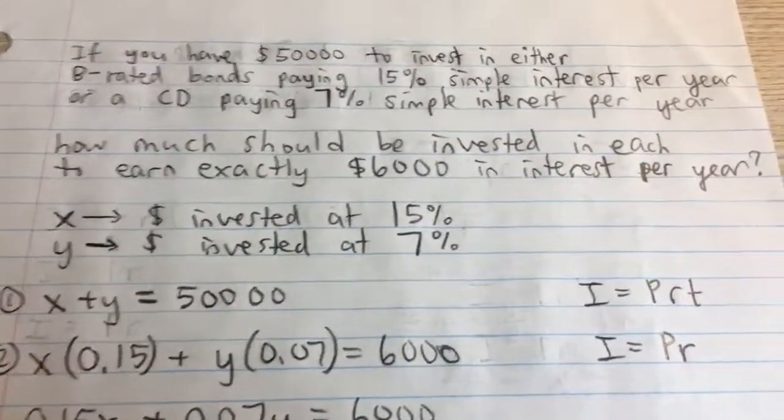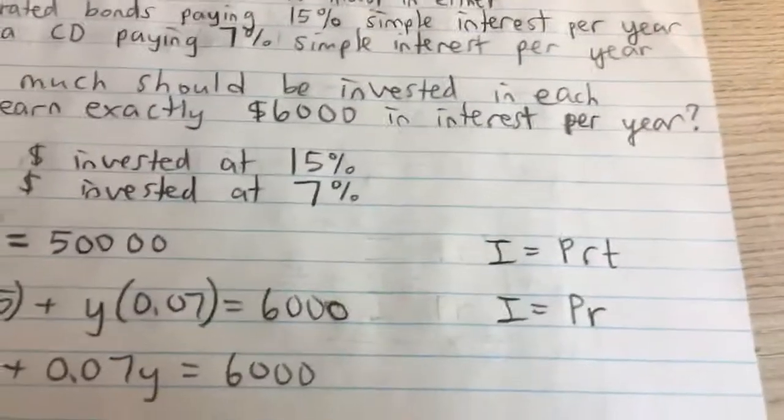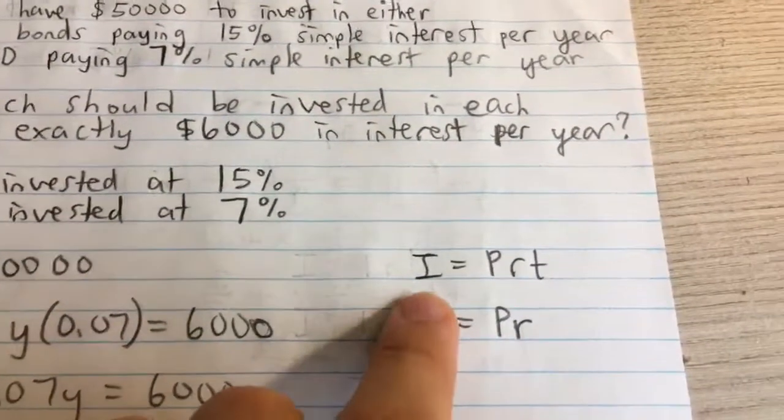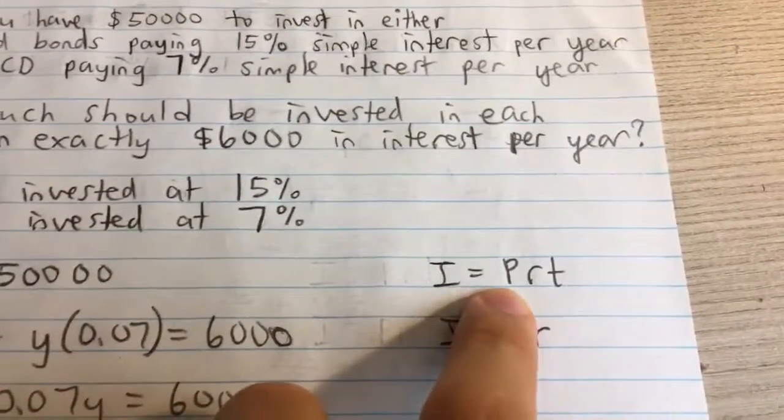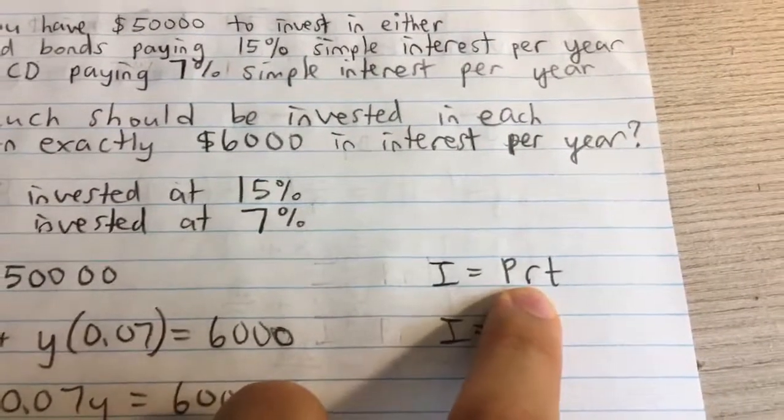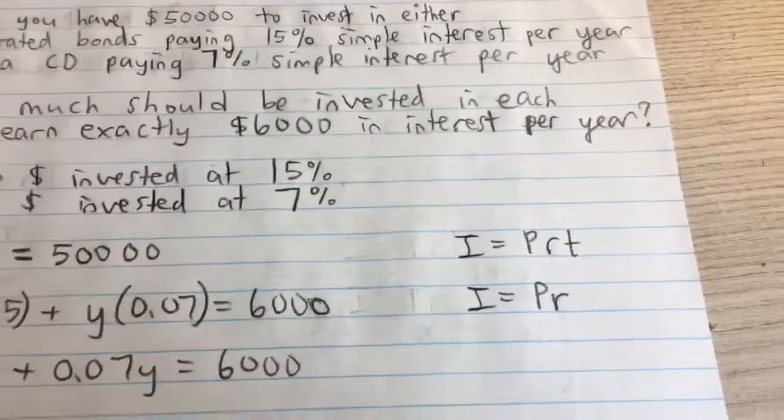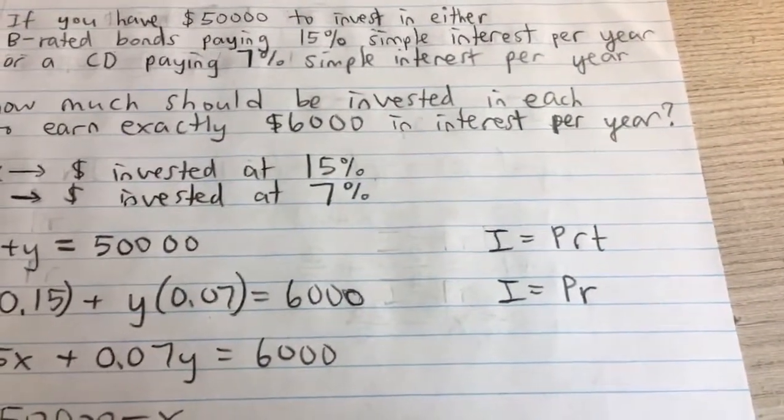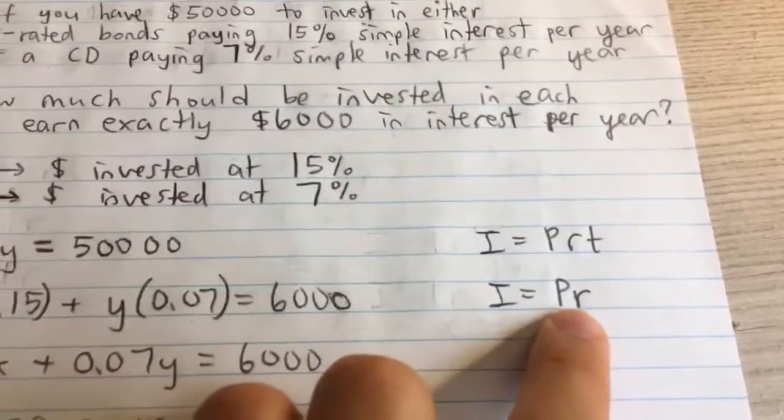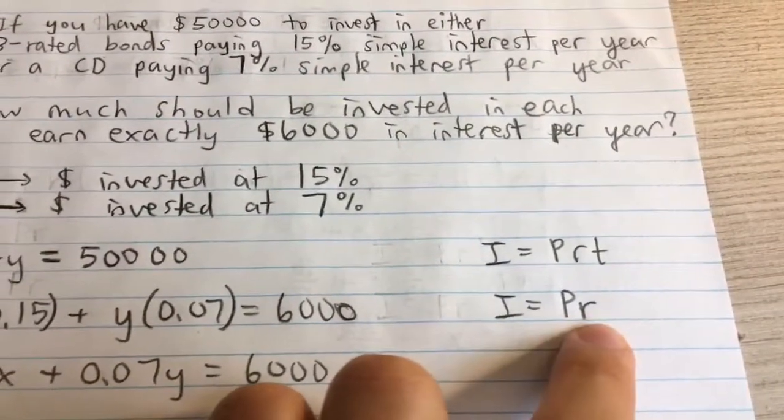Second, I can create an equation based on the interest we're going to earn. Remember the simple interest formula: interest equals the principal (the money you put in) times the rate times the time. But since we're talking about per year, earning money in one year, we can think of it as just the principal times the rate.